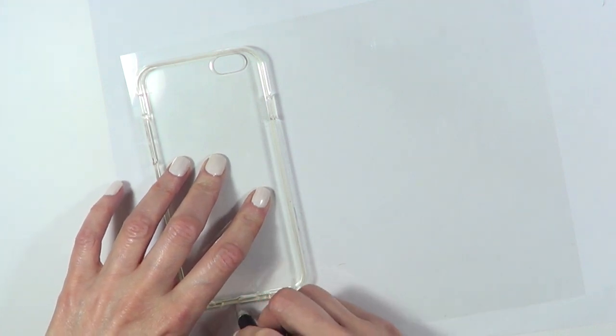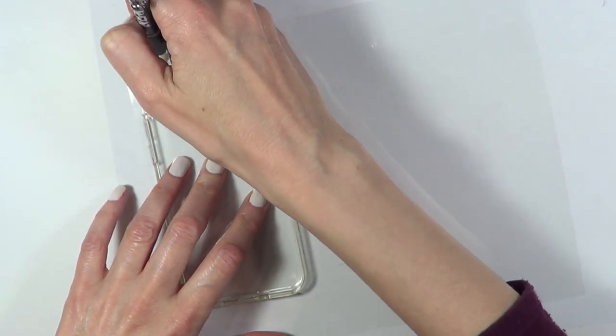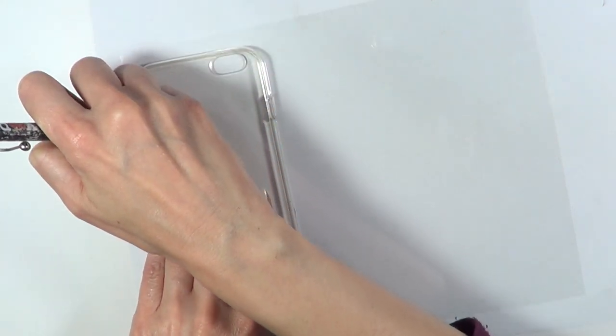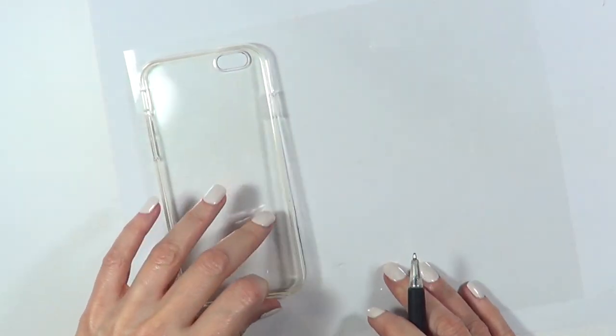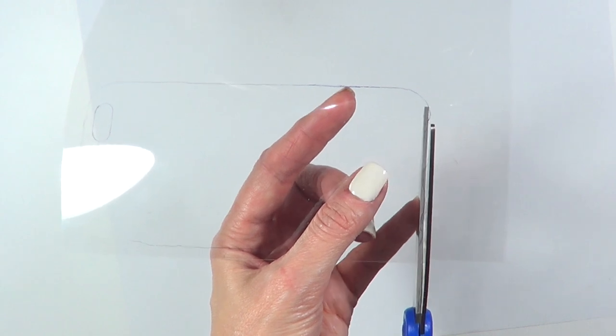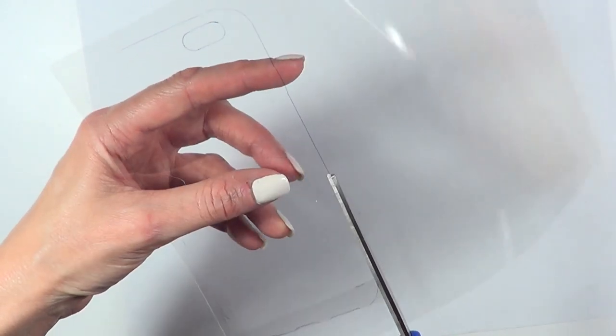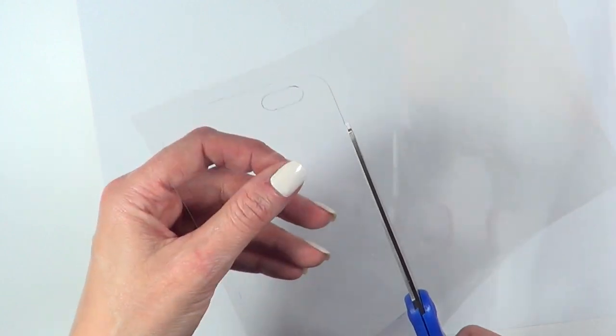For this I'm going to be using an acetate sheet and a clear phone case. This is from Amazon. I'm just going to be tracing the shape of my phone case on my acetate sheet with a pen, placing it upside down if that makes sense.